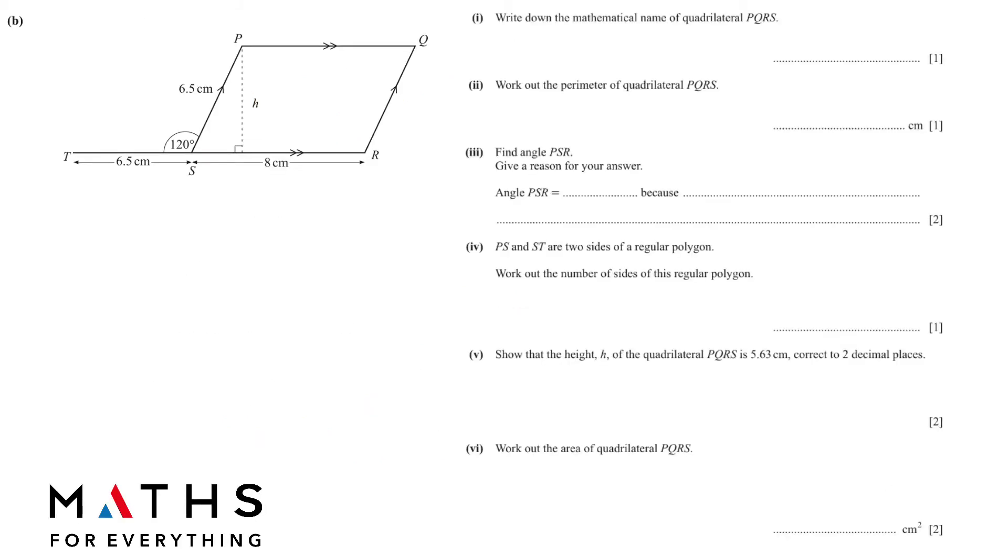Moving to the next part. Write down the mathematical name of quadrilateral PQRS. These two sides are parallel. The one arrow shows that and the double arrow, these two sides are parallel. If two opposite sides are parallel, then that's a parallelogram. The next one, we want to find the perimeter. Perimeter means you add the outside sides. The opposite sides in a parallelogram are equal. You just add them all together and we will get 29 centimeters.